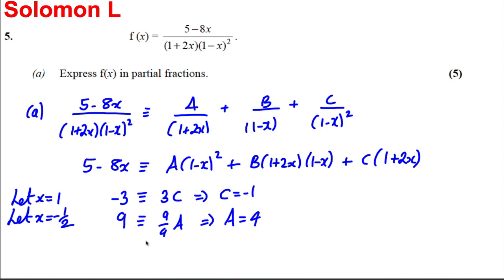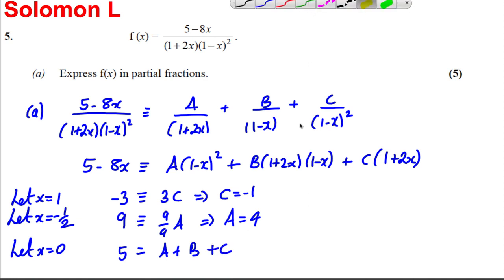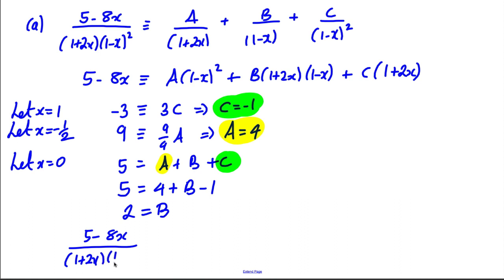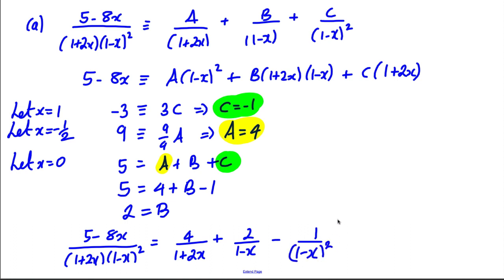Lastly, we need b. The easiest approach is to let x = 0. The left side gives 5, and the right gives a + b + c. We know a = 4 and c = -1, so 5 = 4 + b - 1, meaning b = 2. Therefore: (5 - 8x) / [(1 + 2x)(1 - x)²] = 4/(1 + 2x) + 2/(1 - x) - 1/(1 - x)². Part a is done.